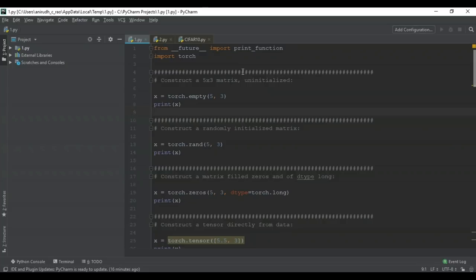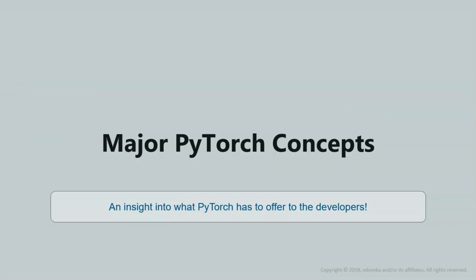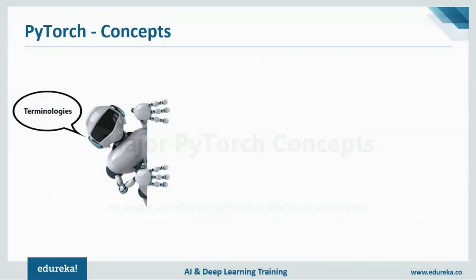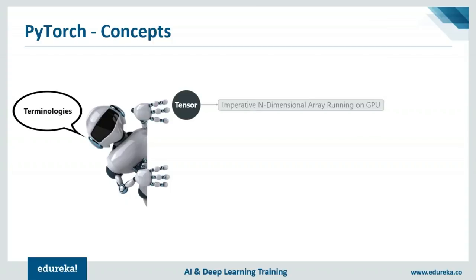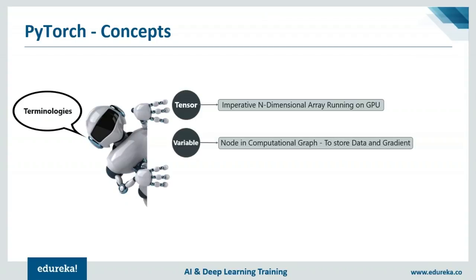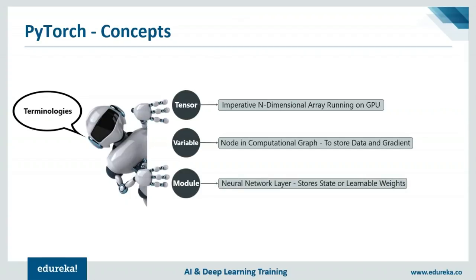Let's check out some of the major PyTorch concepts and basic terminologies. A tensor is an imperative n-dimensional array running on the GPU. Variables are nodes in a computation graph used to store data and gradients. Modules in a neural network layer are used to store states, also called learnable weights.